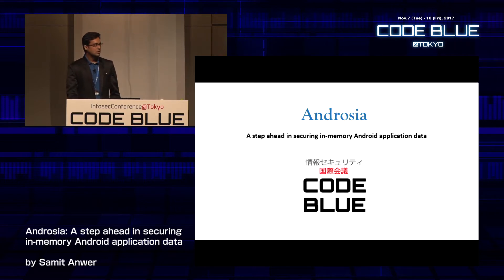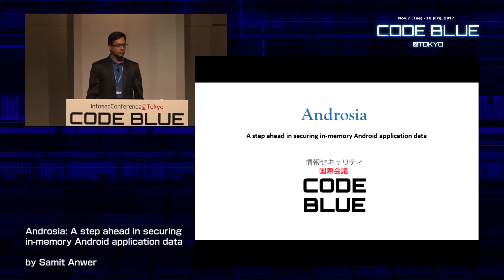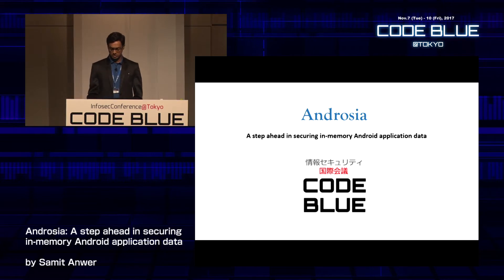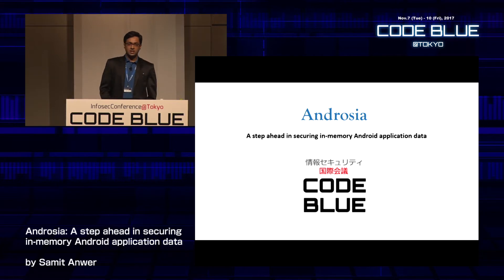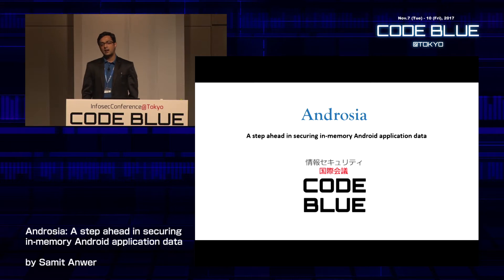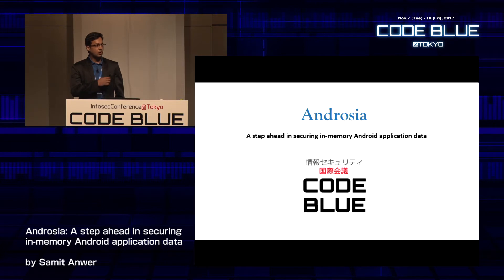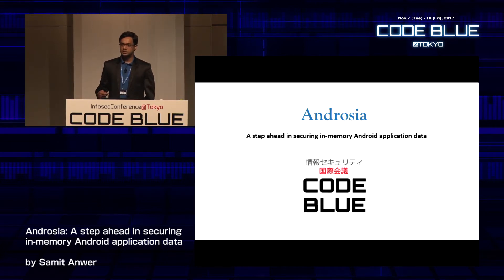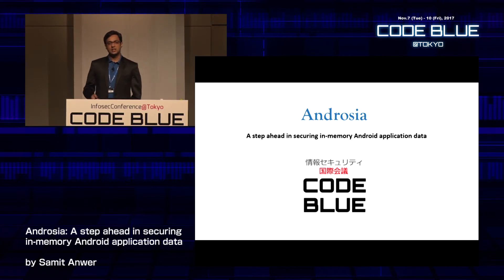Android applications today are filled with sensitive information — credentials, authorization tokens, OTPs, pins — all maintained on the heap. Any attacker who can compromise your process can access your heap's memory content. You don't want sensitive information lingering on the heap, and that's where our tool comes in, clearing the heap memory of the object as soon as it is last used.